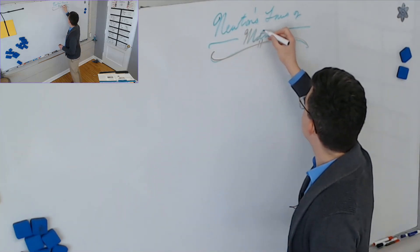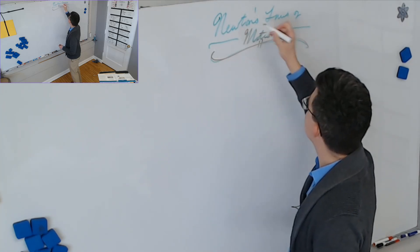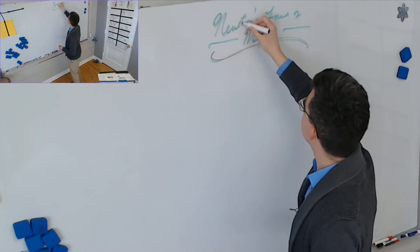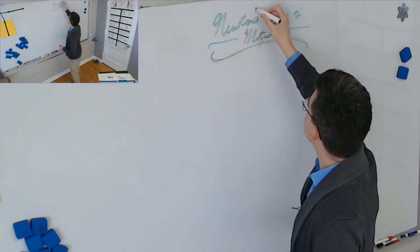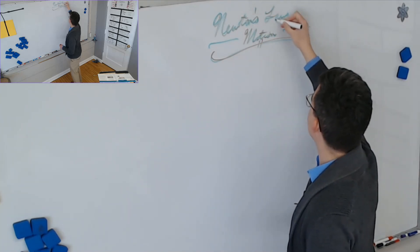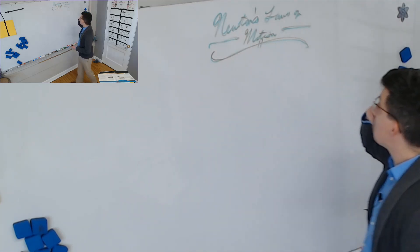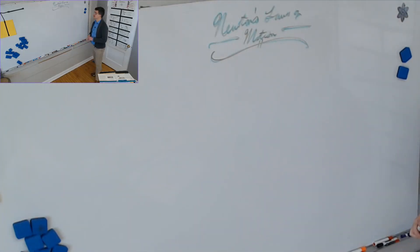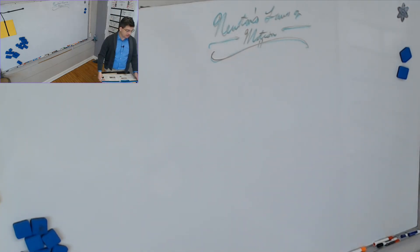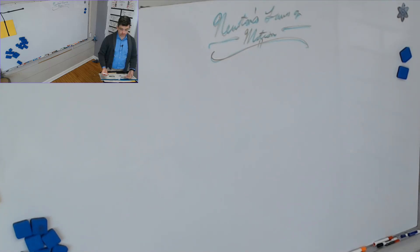If you're having a hard time reading my handwriting, where else can you find this information? You can look in your explorations. This is the same, or similar, to what's in your book, and that text is written by a machine so you can read it pretty easily.